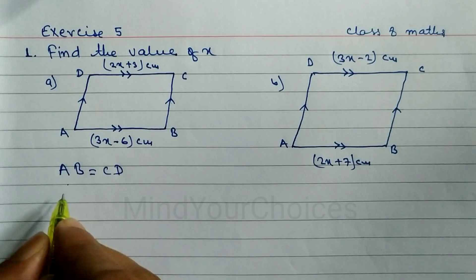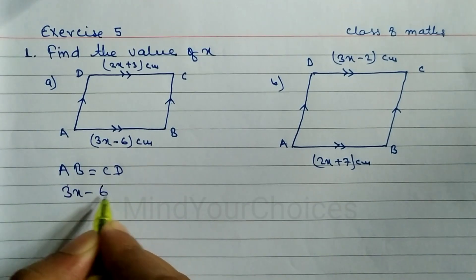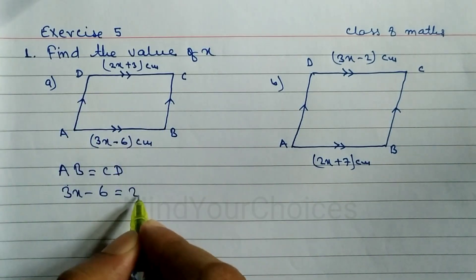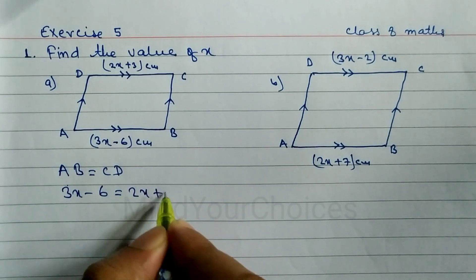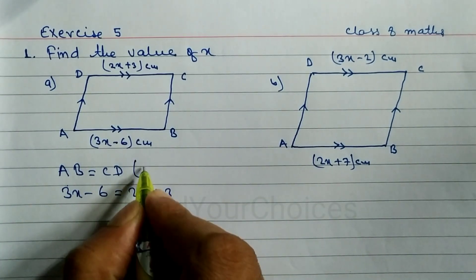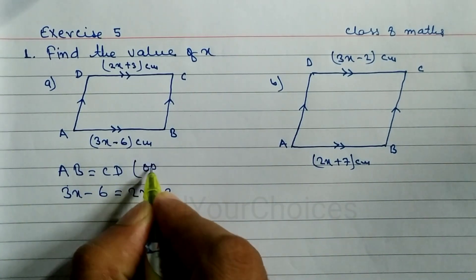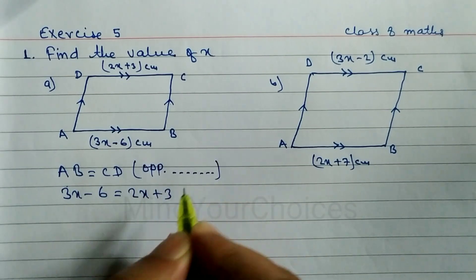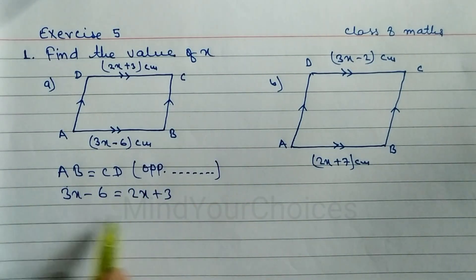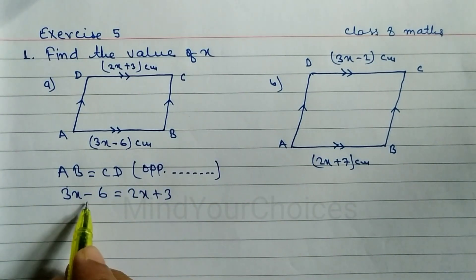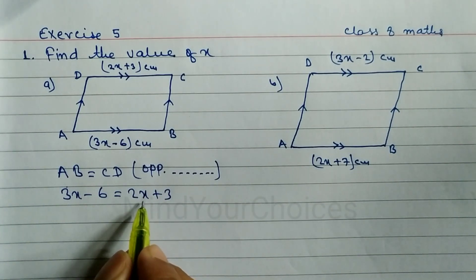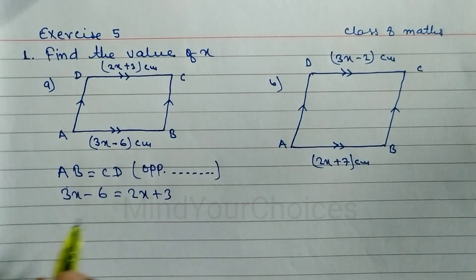What is the value of AB here? 3x minus 6 is equal to CD, which is 2x plus 3. We have to write down that opposite sides of a parallelogram are equal. After that we have to arrange and find out the value of x. So: 3x minus 6 is equal to 2x plus 3.